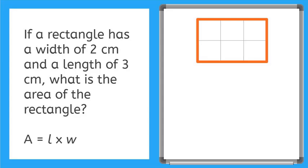Let's fill in our formula. A for area is equal to, we have a width of two and length of three, so two times three. Two times three is six, so our area is equal to six centimeters.